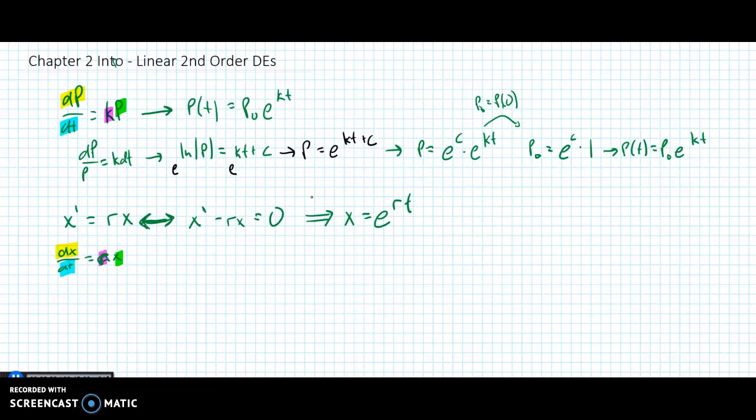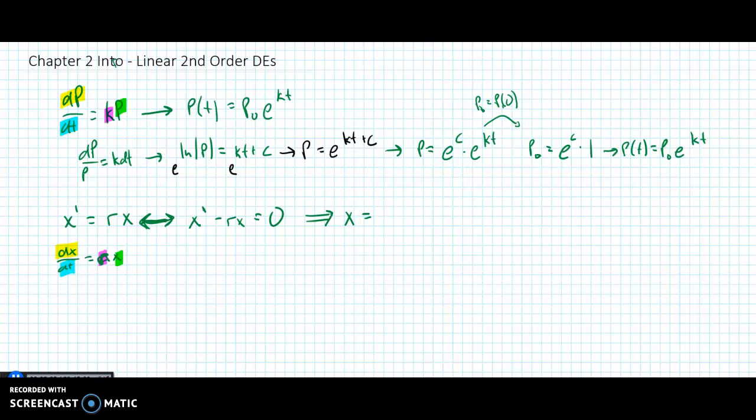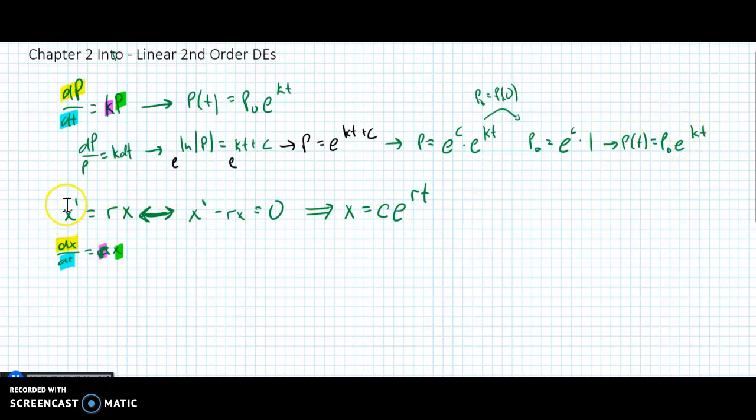My solution is x equals e to the rt, and actually it's going to be a constant c times e to the rt. Notice this form is the same. It's just the totally same structure.